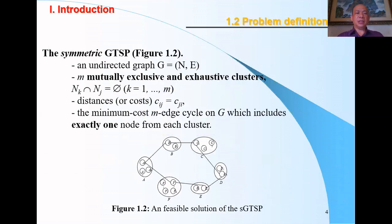The symmetric GTSP is illustrated in Figure 1.2. In the undirected graph G, it includes M mutually exclusive and exhaustive clusters. The distance or cost between two cities I and J, CIJ equals CJI. We have to find the minimum cost Hamiltonian cycle on G which includes exactly one member from each cluster.